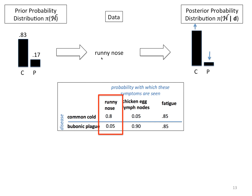Let's say that you saw a runny nose. Since a runny nose is far more common on the condition you have the cold than the condition that you have the plague, you ought to update your probabilities by raising your probability assignment that you have a cold and lowering the probability assignment that you have the plague. I want to be careful here — you don't simply replace your prior probabilities with these likelihood numbers; that's wrong. Notice that your prior probability is already 0.83 that you have the cold. If you simply replaced that with 0.8, you would be lowering the probability that you have a cold, which is clearly false. What you want to do is update your probabilities in the direction of increasing your priors, because you've seen data that is more likely on the condition you have the cold than the plague.